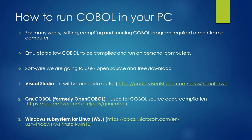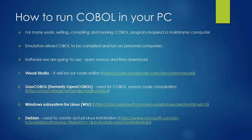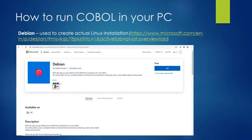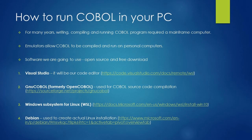To execute the compiled program, I am going to use a Linux machine. For that, we are going to use two tools: one is Windows Subsystem for Linux (WSL), and the other is Debian, which will create an actual Linux installation. In the next videos, I am going to show you how to install these tools on your local Windows 10 system and how to code, compile, and execute your COBOL program in this environment.